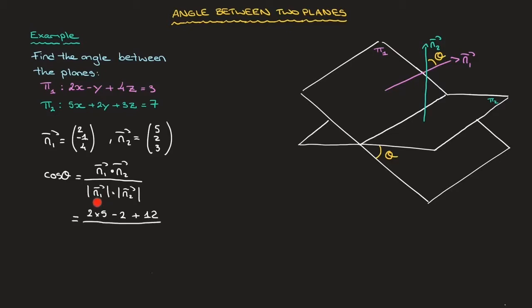So let's do that on the right-hand side here. The magnitude of n₁ equals the square root of 2² + (-1)² + 4². And that equals the square root of 4 + 1 + 16. And so that magnitude equals the square root of 21.